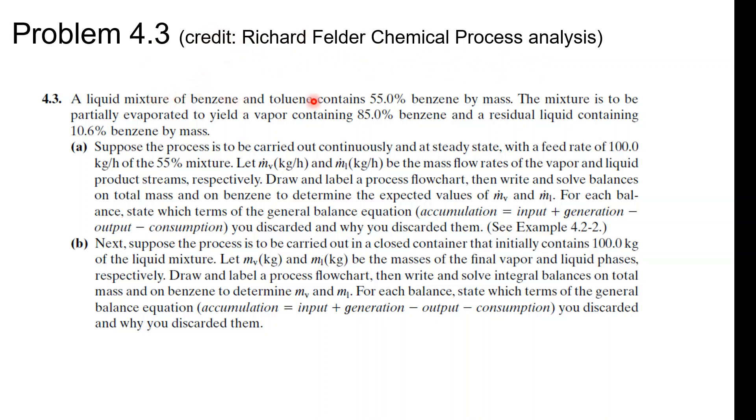Here we have a liquid mixture of benzene and toluene containing 55% benzene by mass which is to be partially evaporated to yield a vapor containing 85% benzene and a residual liquid containing 10.6% benzene by mass. Suppose the process is to be carried out continuously and at steady state with a feed rate of 100 kg per hour. Let m.v and m.l be the mass flow rates of the vapor and liquid product streams respectively. We are to draw and label a process flow chart, then write and solve balances on the total mass and on benzene to determine the expected values of m.v and m.l. For each balance, state which terms of the general balance equation - accumulation equals in minus out plus generation minus consumption - you discard and why.